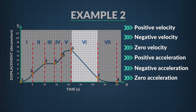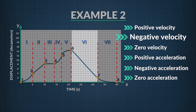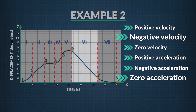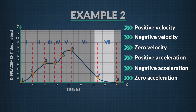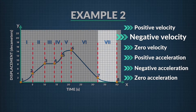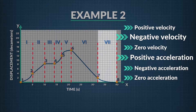In region 6, the slope is negative and constant. The go-cart's velocity is negative and its acceleration is zero — it is moving at a constant velocity in the negative direction. In region 7, the slope is negative and increasing. This means the velocity is negative, but acceleration is positive. The cart is coming to a stop, slowing down in the negative direction.